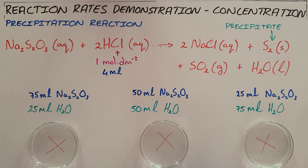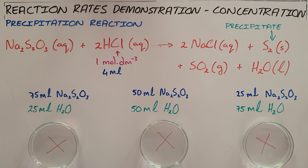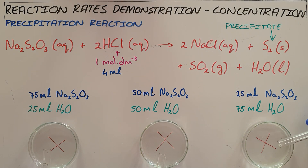What we're now going to do is simultaneously add four milliliters of one molar solution of hydrochloric acid to each of these and observe the rate at which each of these reactions happen. It's important to add the acids all at the same time to ensure that the reaction proceeds at the same rate.